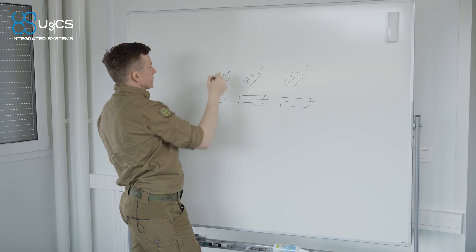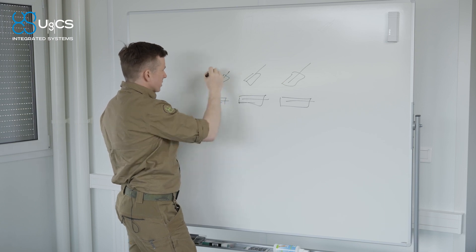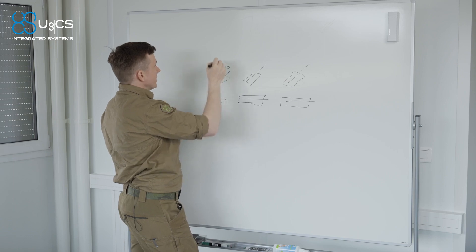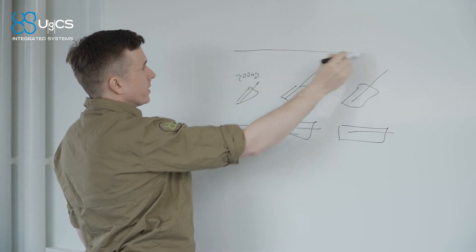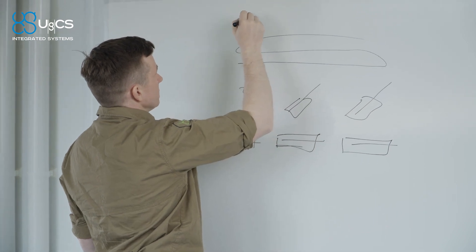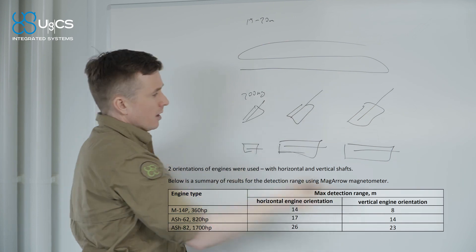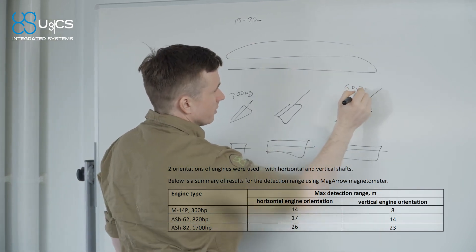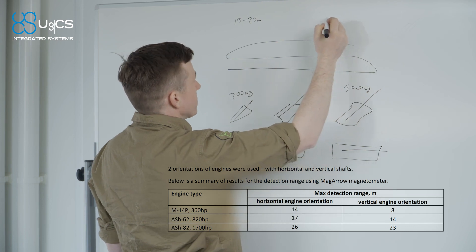We found out that the smaller engine which as I mentioned is around 200 kilos in total, this radial engine, disappears from our readings around 15 to 20 meters range.